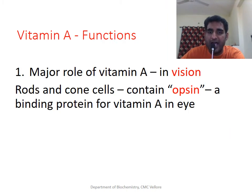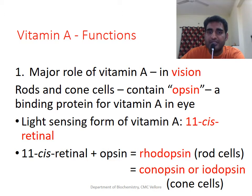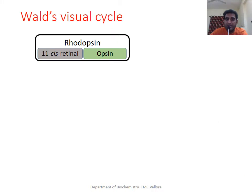The major role of Vitamin A is in the eye as the light-sensing pigment in cells of the retina. The binding protein for Vitamin A is called opsin, present in both rod and cone cells. The form of Vitamin A here is 11-cis retinal. In rod cells the protein is called rhodopsin, while in cone cells it's called conopsin.